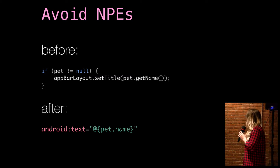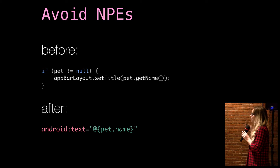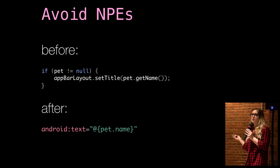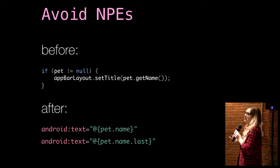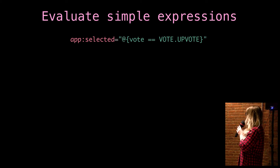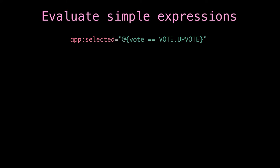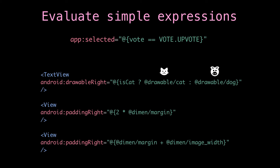Alright, so I promised XML tips and tricks. Here are some of the things you can do now in XML. Before, if your pet object isn't null, set the title to pet.getName — otherwise you'd throw a null pointer exception. Using data binding, no more null pointer exceptions: if pet is null, it sets name to the default null and your text field will be empty. Also, if you have a name object with a first and last name, you can go as many levels deep as you want, and there will still be no null pointer exceptions. You can evaluate simple expressions in your XML — selected equals vote equal upvote, or drawable right: if it's a cat put a cat icon, or two times margin, or padding right equals margin plus image width. Simple things, but it's a huge deal.